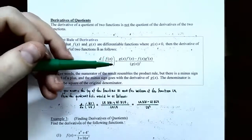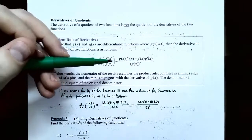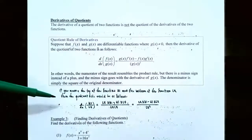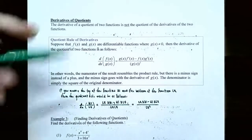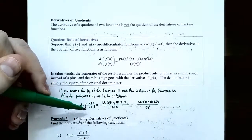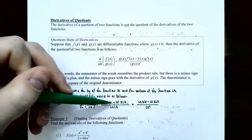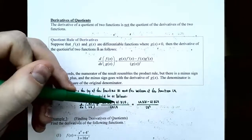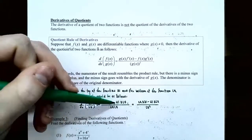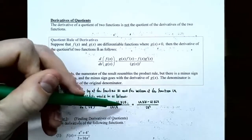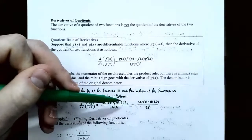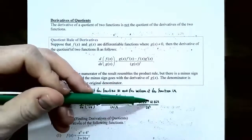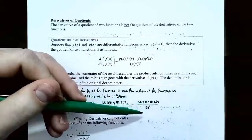Now, if you name the top of the fraction 'high' and the bottom of the fraction 'low,' the quotient rule becomes easier to remember. The derivative of high divided by low is: low d high minus high d low, all over low low — or low squared. So this becomes: low times the derivative of high, minus high times the derivative of low, all divided by low squared.